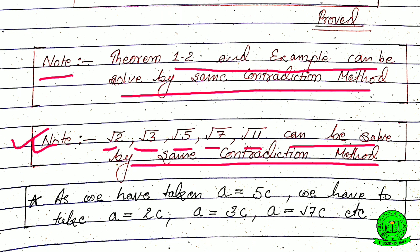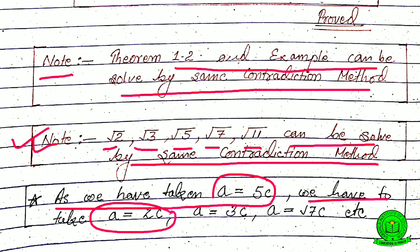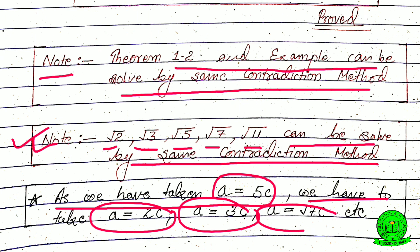What you have to do differently is change the substitution: for root 2, take a equals 2c; for root 3, take a equals 3c; for root 7, take a equals 7c; for root 11, take a equals 11c — like that.